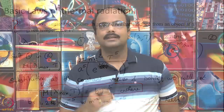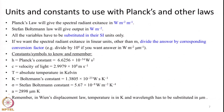Before proceeding further, some important points about units and constants must be kept in mind. Planck's law gives spectral radiant exitance with units of watt per meter squared per meter of wavelength. This may look odd — the unit reads W m⁻² m⁻¹ — but it means power emitted per unit area of the object per unit wavelength interval. The two 'meter' terms refer to different things: area of the object and wavelength interval.